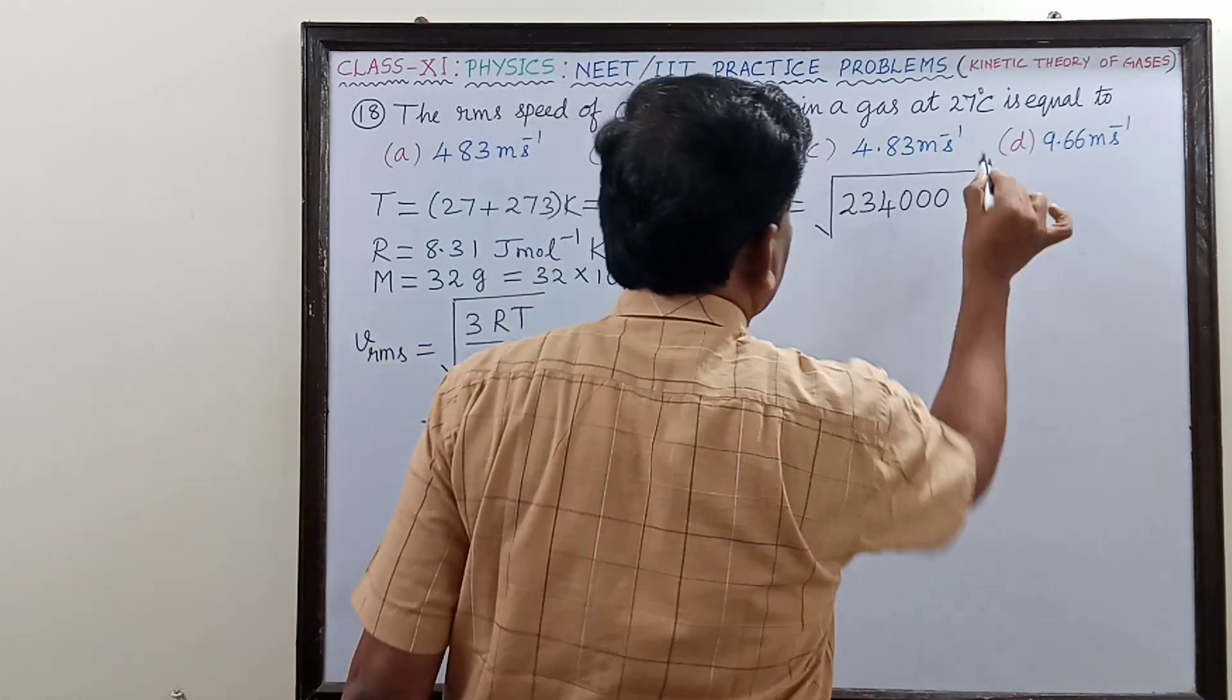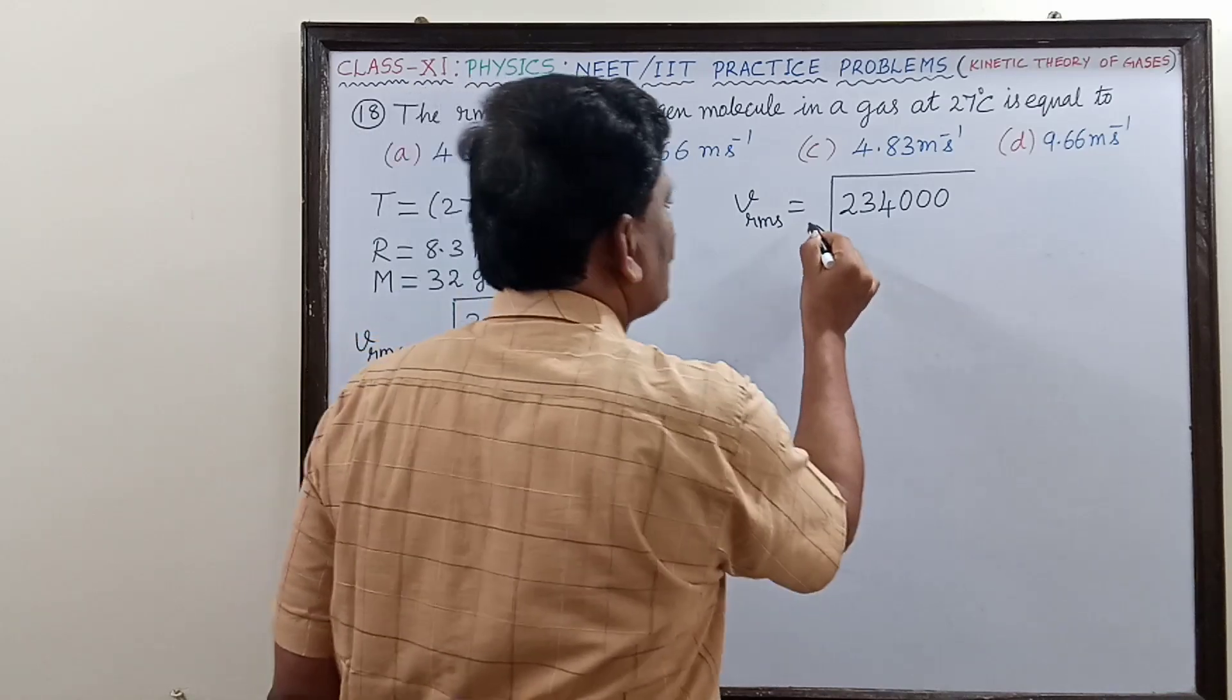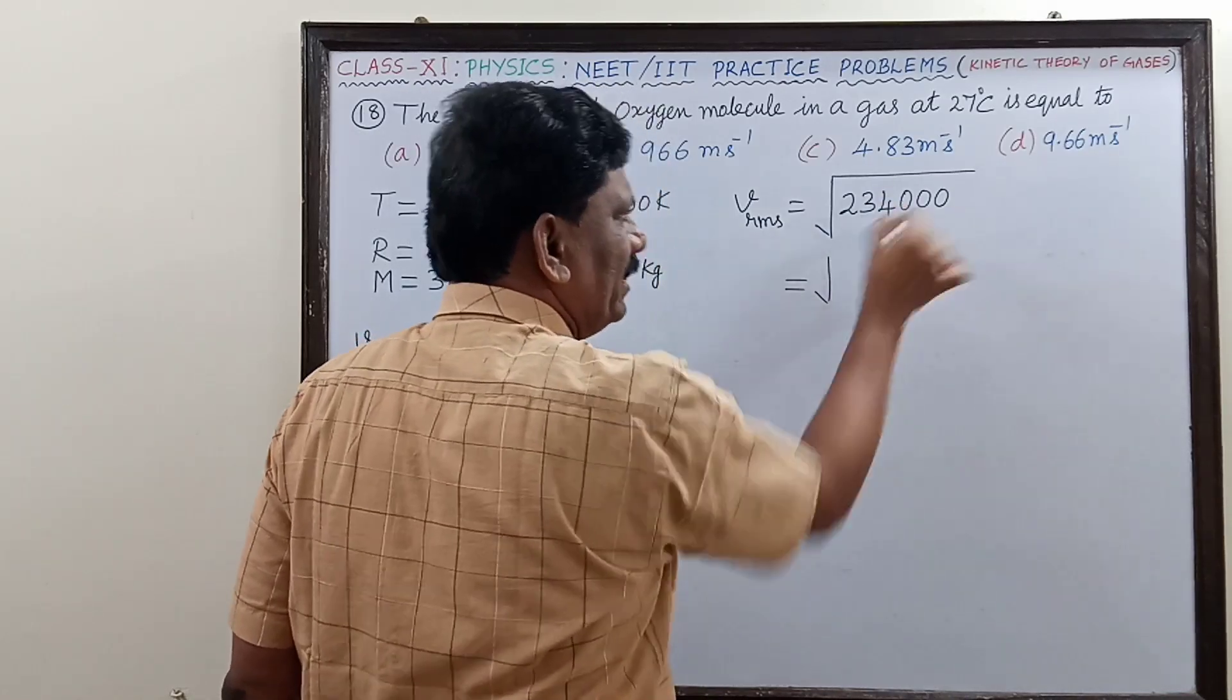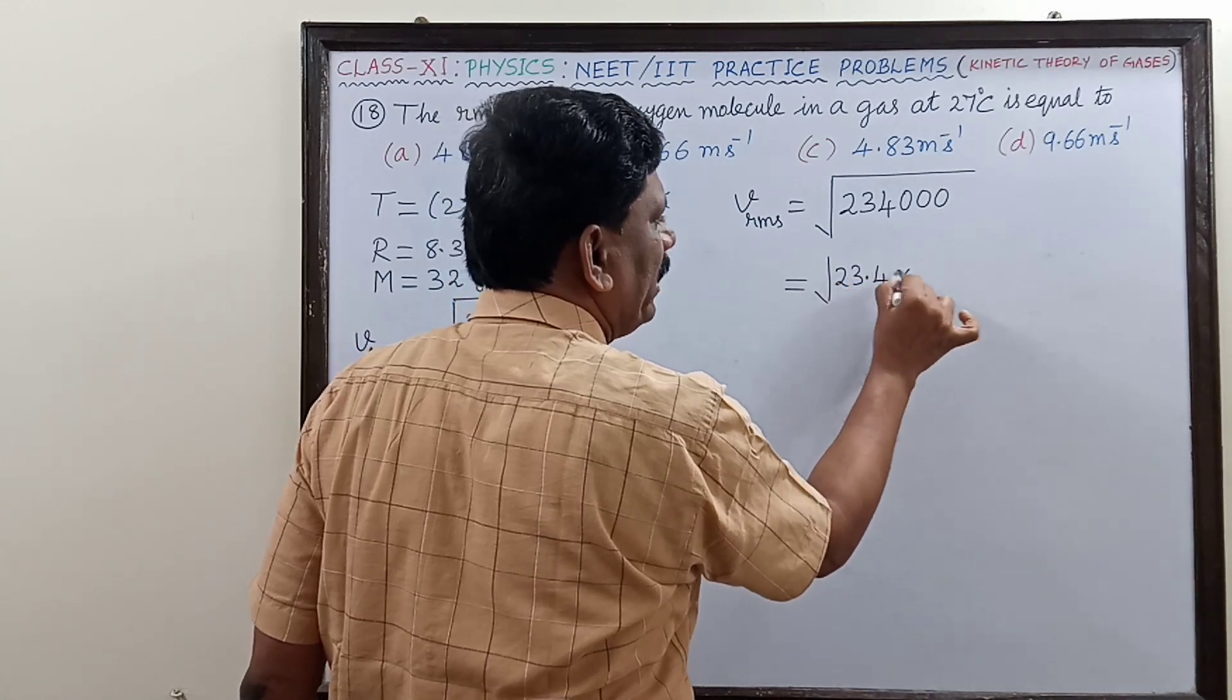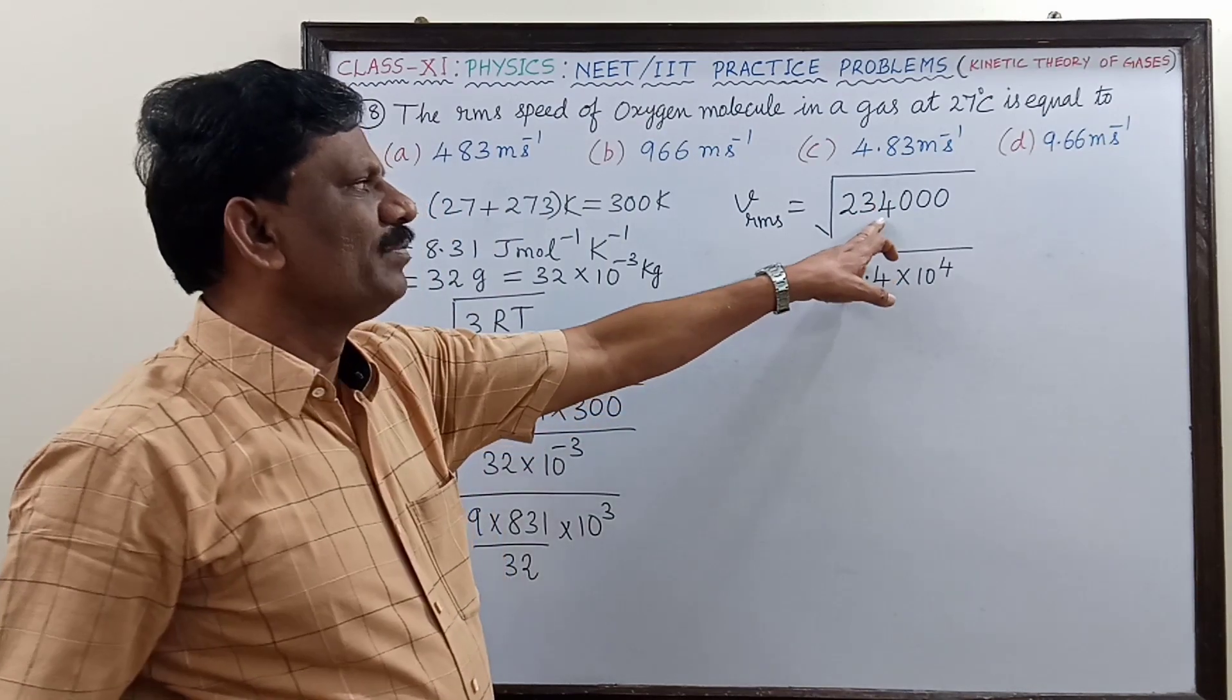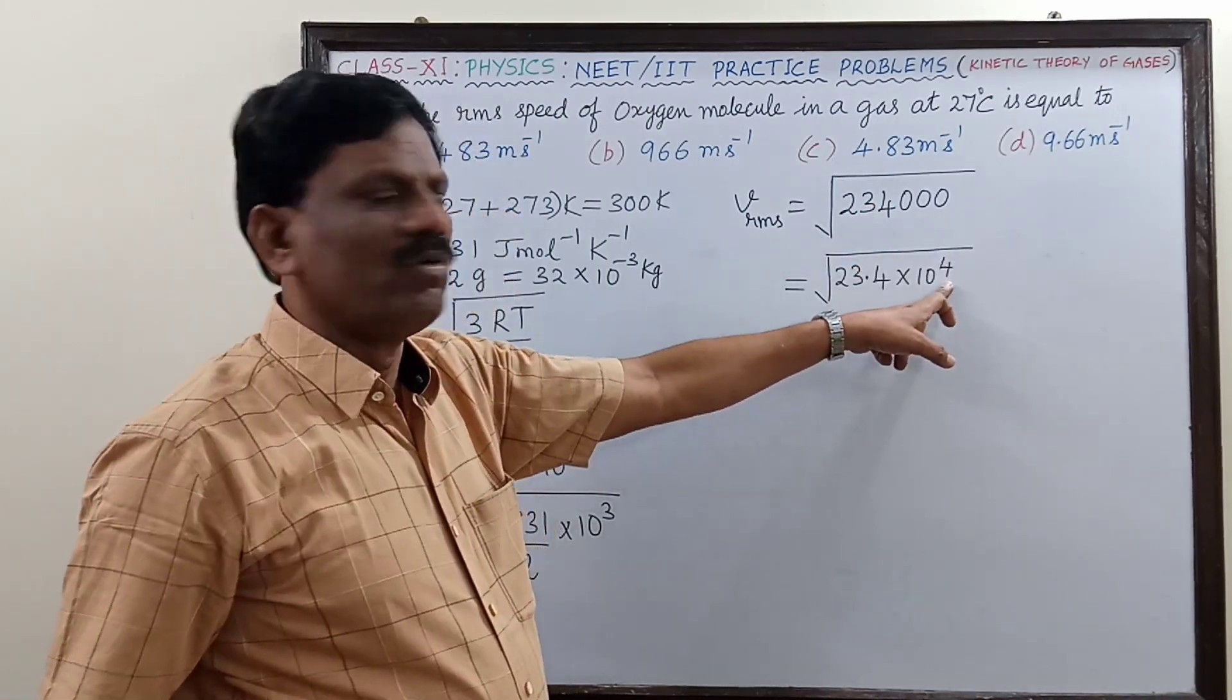Triple zero into 10 power 3. This much big number is coming, which can be written as 23.4 into 10 power 4. The decimal is kept here at 23.4, so after that 10 power 4.